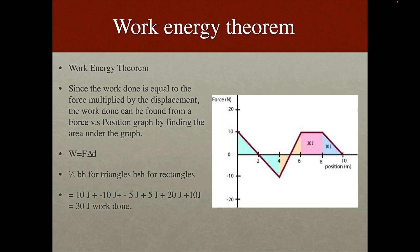Now since the work done is equal to the force multiplied by displacement, the work done can be found via a force versus position graph by finding the area under the graph. So work equals F delta D. So one half base times height for triangles and base times height for rectangles. So if we take a look at this force versus position graph, we can find the area under the graph. Now notice that the area above the x-axis is positive and the area under the x-axis is negative. And we will add these quantities up, and when we do that, we find the network done is 30 joules.